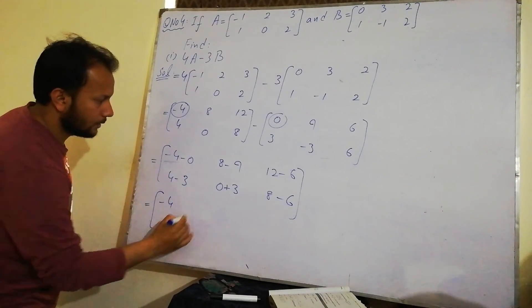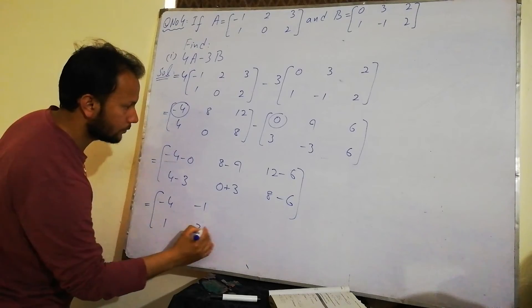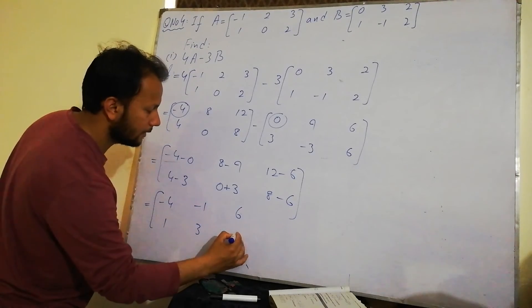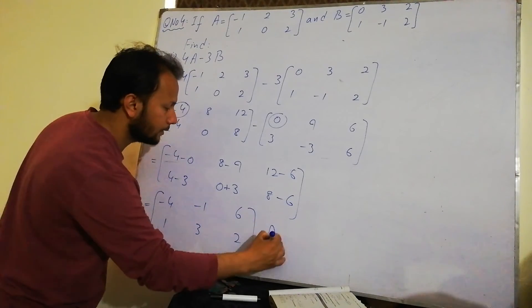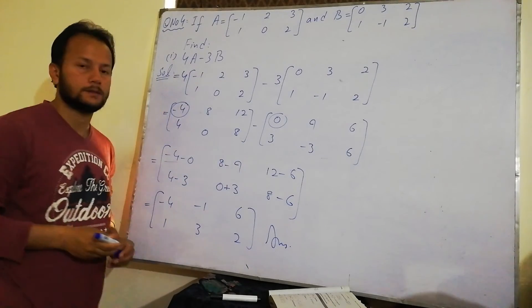Here we have 4, 1, minus 1, 3, 6, and 2. So here we got our answer.